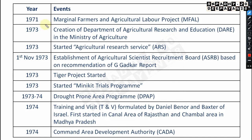Again in 1971, MFL — Marginal Farmers and Agricultural Labour project — was established. This is also important from an abbreviation point of view.